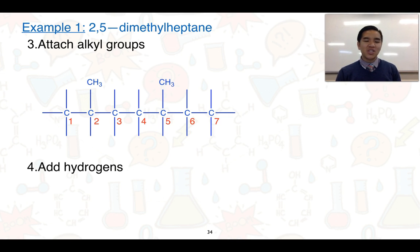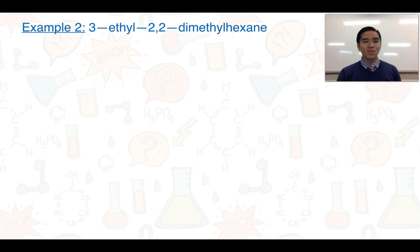And finally, the last thing we need to do is just add hydrogens. So any of these exposed bonds now should receive hydrogen. So we're just going to fill all of them up with hydrogens, and we've got our structural formula here. One more example with this. So this one looks a little bit tricky, but it's actually quite simple again.